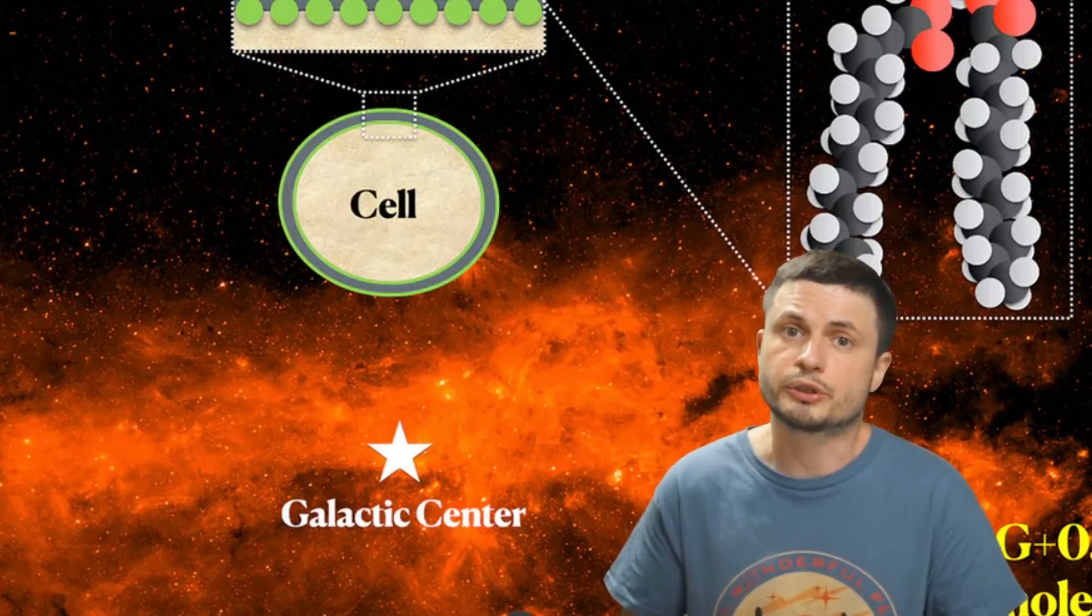But this discovery definitely suggests that this molecule can easily be formed in space, and these clouds can contribute to the assembly of these molecules very early in the existence of the star system. And then all of these molecules would be delivered to growing planets, with possibly some planets getting just the right mixture of these early molecules to then kickstart life.